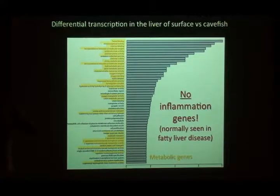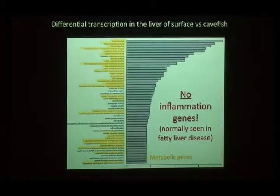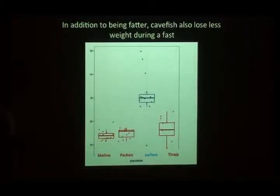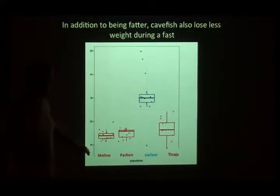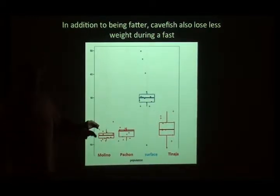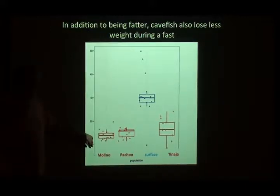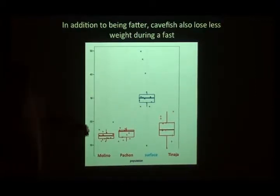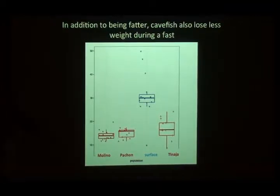In addition to being fatter, cave fish also lose weight very slowly. If you starve them over a two-month fast, river fish lose about 30% of their body weight while cave fish lose only about 15%. So they gain weight easily when food is available and lose weight slowly when it's not — exactly what you want to do if you want to conserve food in a famine-feast environment.